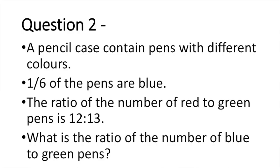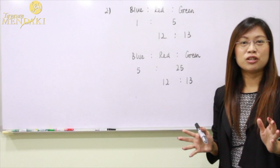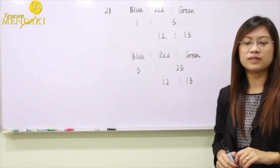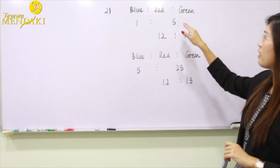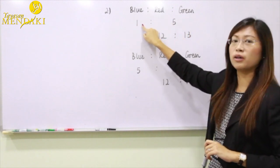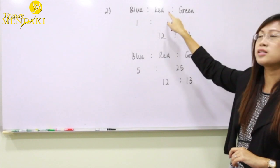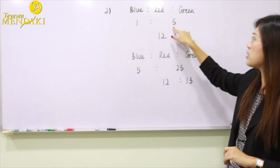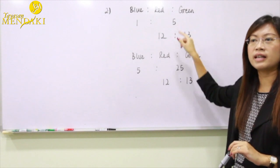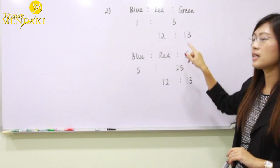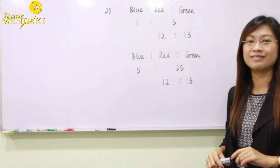Question two: a pencil case contains pens of different colors. One sixth of the pens are blue, and the ratio of red pens to green pens is 12 is to 13. What is the ratio of blue pens to green pens? Since one sixth of the pens are blue, there is one unit for blue pens and the remaining five units represent the red and green pens.